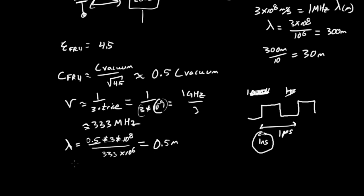You can work through the math and convince yourself. So lambda over 10 is equal to 0.05 meters, or instead equal to 5 centimeters.